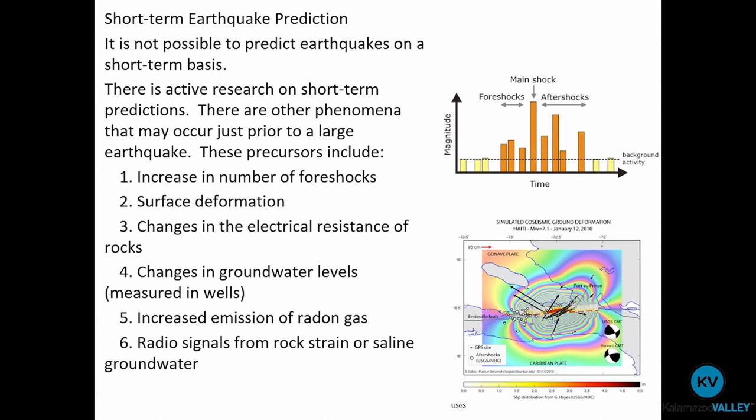Other things that put the anticipation of a main shock earthquake on our radar: surface deformation. Elastic rebound can change the surface topography slightly, so if we're noticing some slight changes in the surface — it's deforming — that can be one sign. Changes in electrical resistance of rocks: this is an exchange of energy, which can alter the way that new incoming energy can pass through that rock.